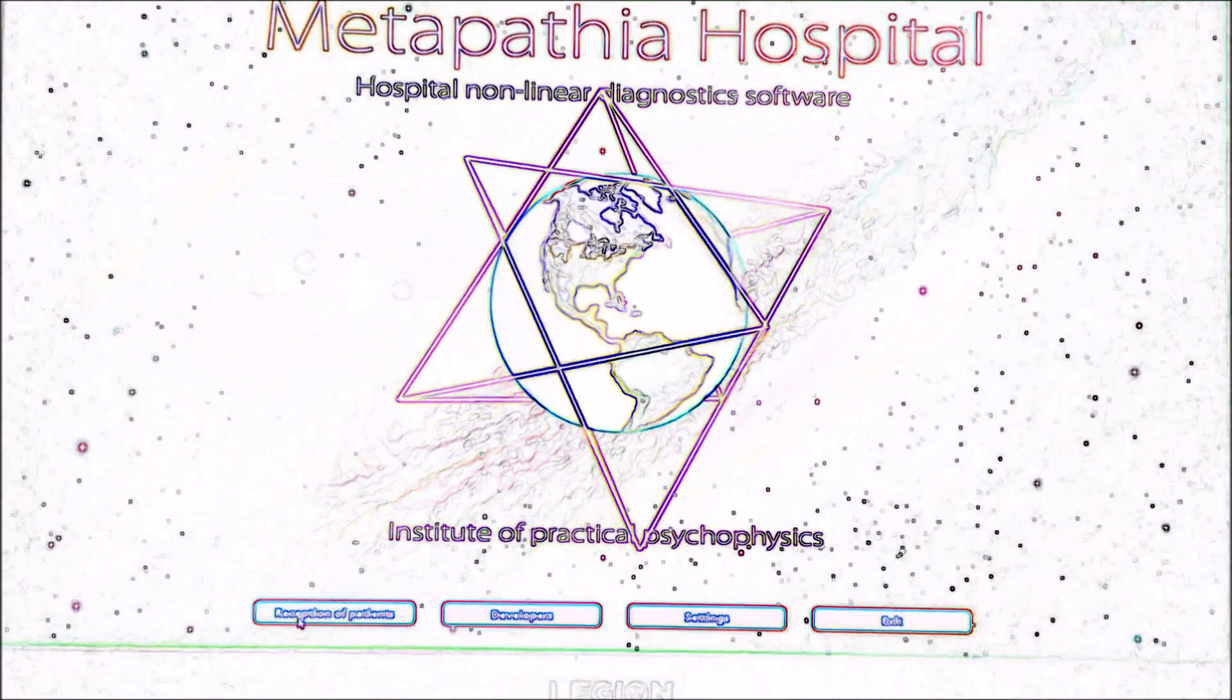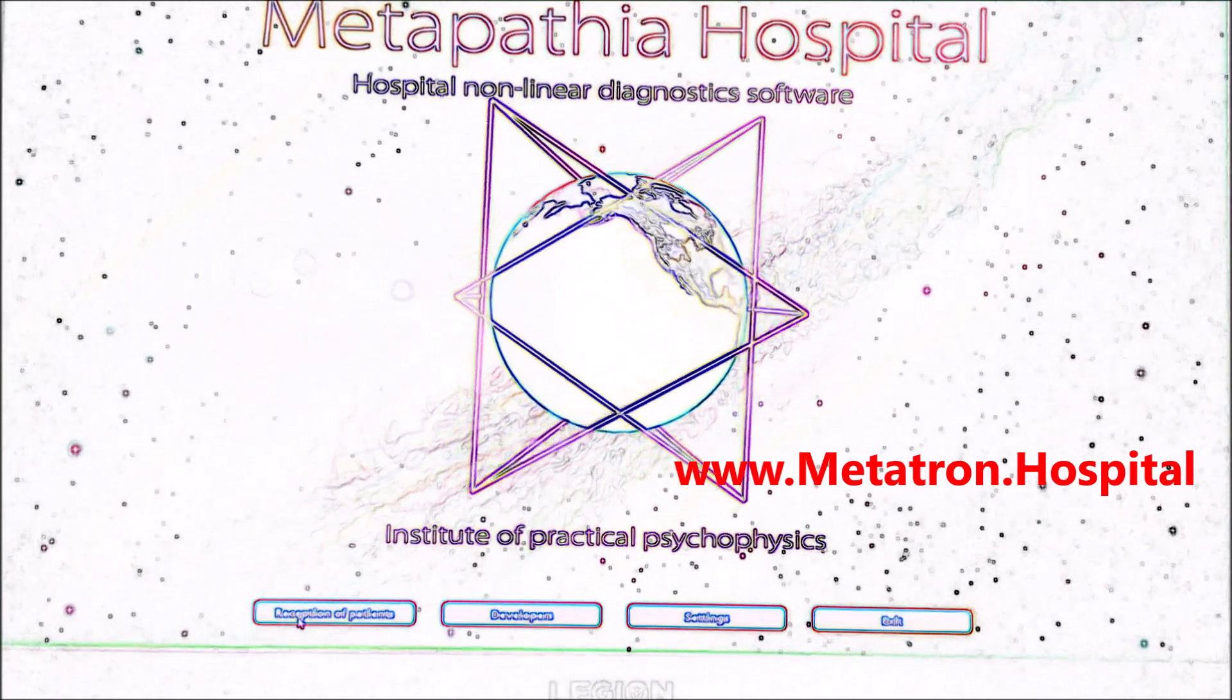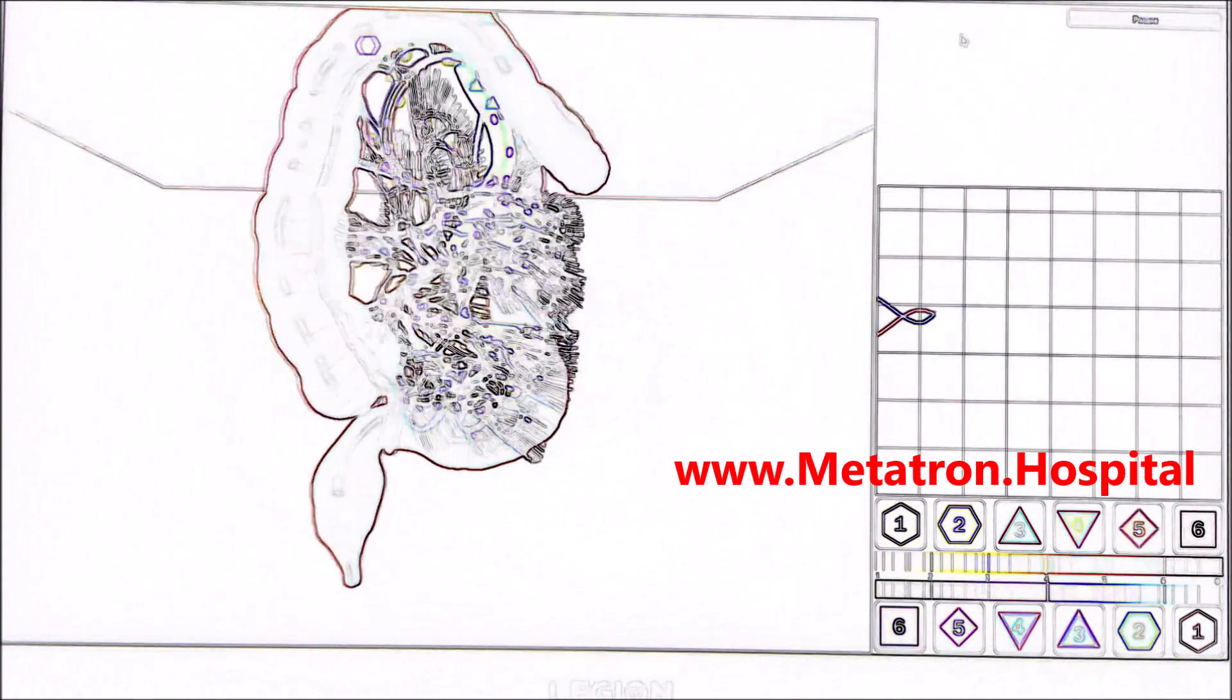Required information that determines your Quantum ID are name, gender, date of birth, blood type, address, and phone.